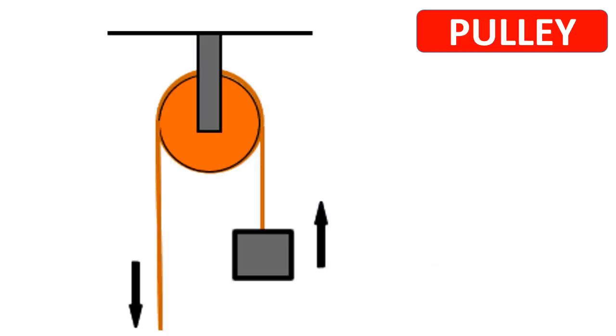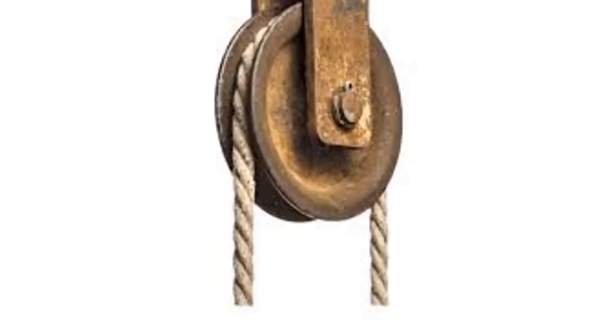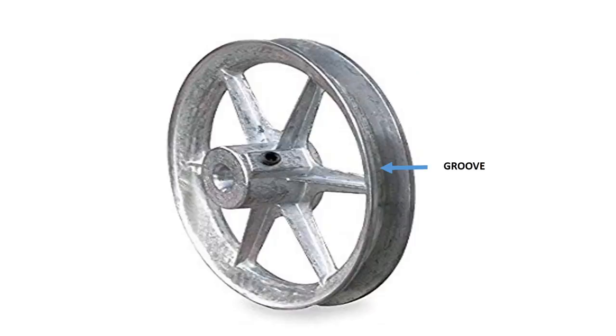Pulley: A pulley is simply a wheel with a groove in it and a rope in the groove. The groove is important because it helps to keep the rope in place.